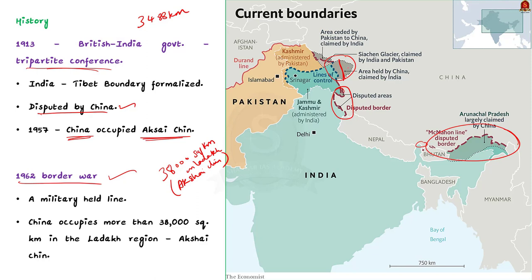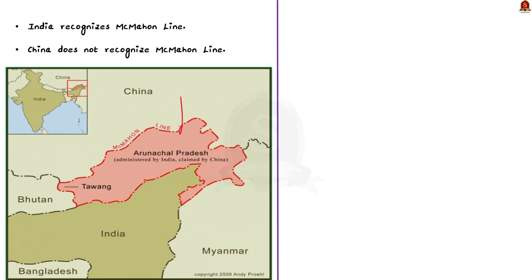India recognizes the McMahon Line and considers it to be the actual line of control between India and China, while China does not recognize the McMahon Line. The McMahon Line is a boundary line present in the eastern part of the Indo-China border — it lies to the north of Arunachal Pradesh, which also borders China. You can see the McMahon Line in the image here. This line was breached by China in 1962 when the Chinese army invaded the eastern boundary of India through the Arunachal Pradesh route. However, they left the region after occupying it for some days. Practically speaking today, the McMahon Line is the international boundary between Arunachal Pradesh and China.